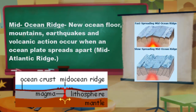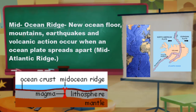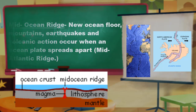Mid-ocean ridge: new ocean floor, mountains, earthquakes, and volcanic action occur when an ocean plate spreads apart. An example of a mid-ocean ridge is the Mid-Atlantic Ridge, which is the largest mountain range in the world.